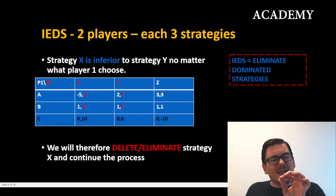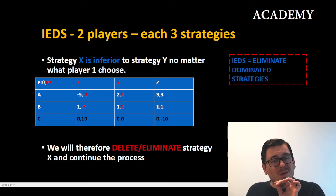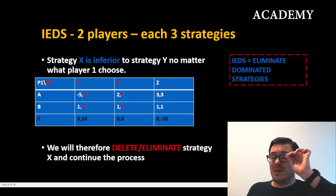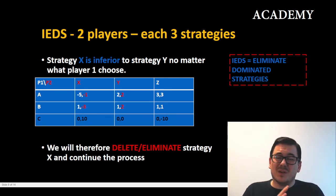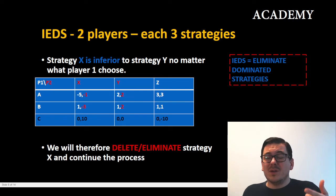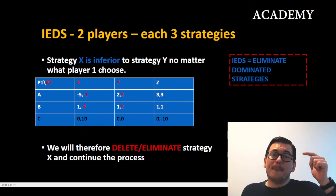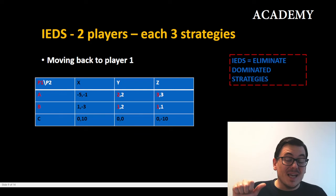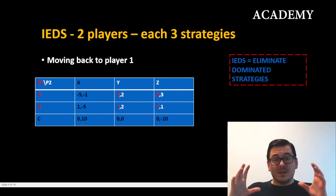Just before we go back to player one, let's look at Y versus Z. With Z, player two would get three and one — one is below two and the other is above two — so we again have a relationship where neither is inferior to the other.